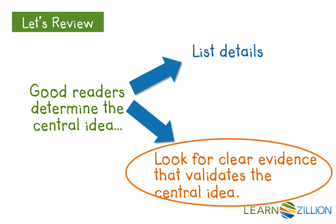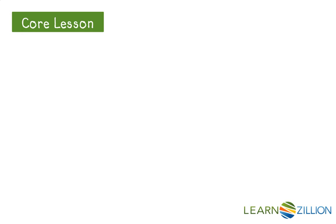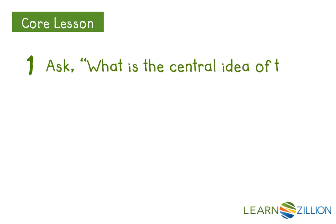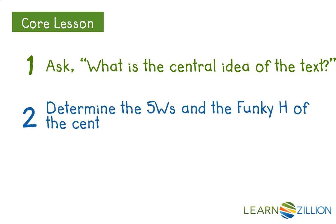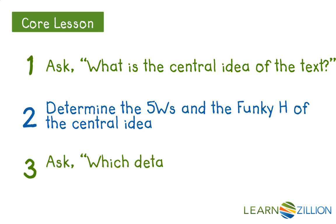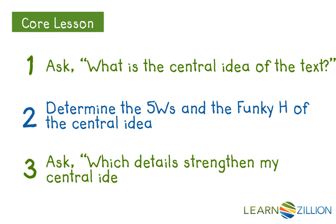Not just facts, but things that make our essential idea better. In order to do that, we're going to follow three steps. First, we're going to ask: what is the essential idea of the text? Next, I'm going to determine the five W's and the funky H of the essential idea. Finally, I'm going to ask: which details strengthen my essential idea, and how?